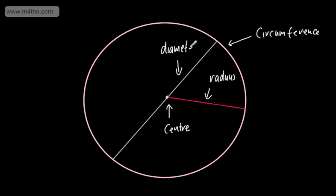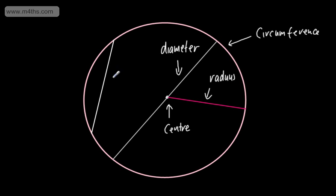The next one I'm going to look at is a chord. A diameter is a special chord as it goes through the centre. A chord simply goes from one part of the circumference to another. We might have one down here or up here — it's entirely up to us where we put these on. So this now is a chord, C-H-O-R-D.